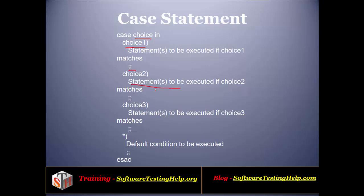If the user enters choice 2, it executes those statements under statement 2, again ending with double semicolon — all cases end with double semicolon. If the user enters a value which is not choice 1, 2, or 3, it moves to the default case, represented by star. The case block is ended by ESAC.